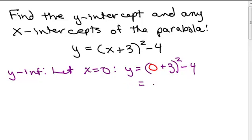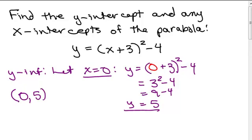And then we just solve using order of operations. 0 plus 3 is 3, so we have 3 squared minus 4. That's 9 minus 4, or 5. So when x is 0, I got that there was one y value. That will always happen on a function. So the y-intercept is (0, 5).